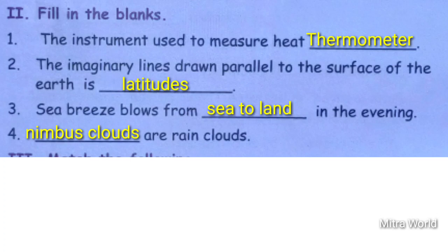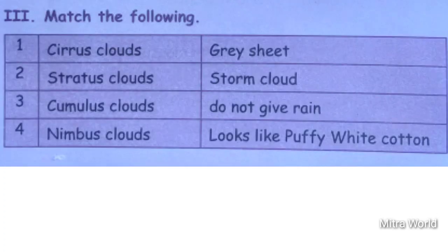Next: match the following. One side we have cirrus clouds, stratus clouds, cumulus clouds, nimbus clouds. The other side we have: grey sheet, storm cloud, do not give rain, looks like fluffy white cotton. First one — cirrus clouds. Very good — cirrus clouds do not give rain. Second one — stratus clouds. Stratus clouds match with grey sheet — they are grey coloured and spread like a sheet.